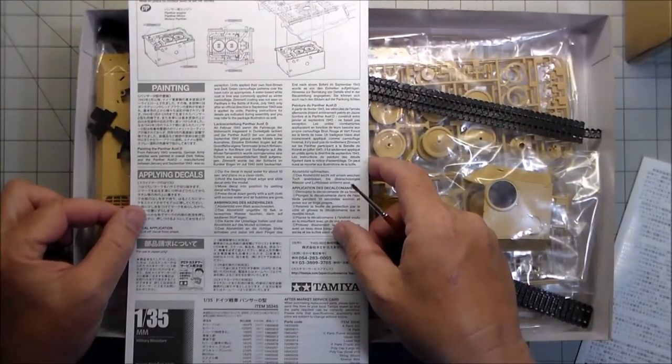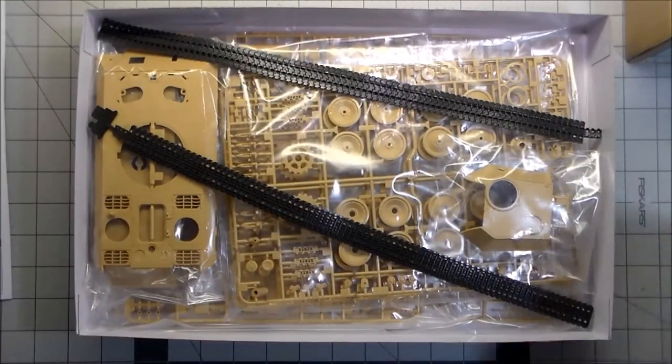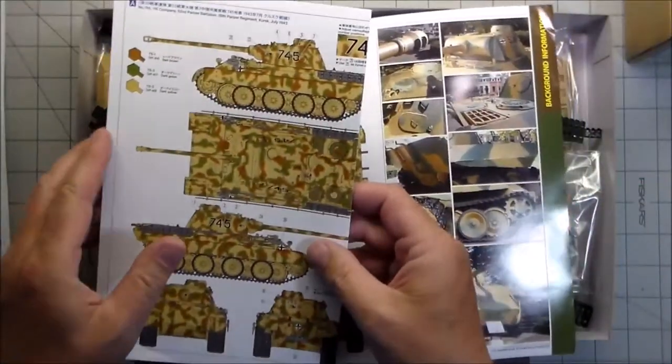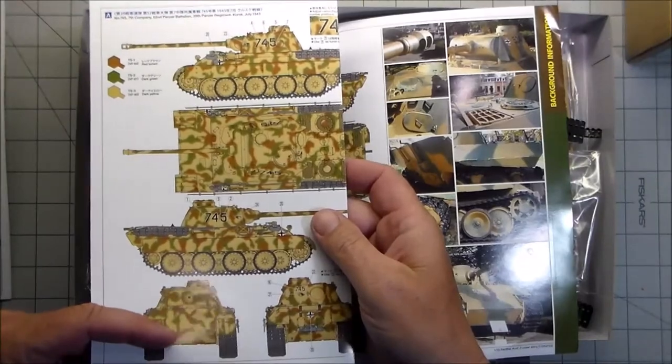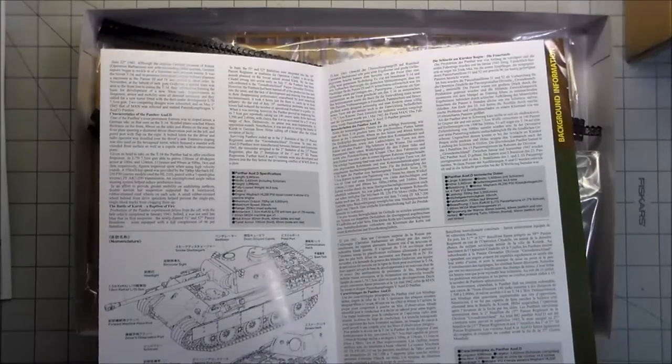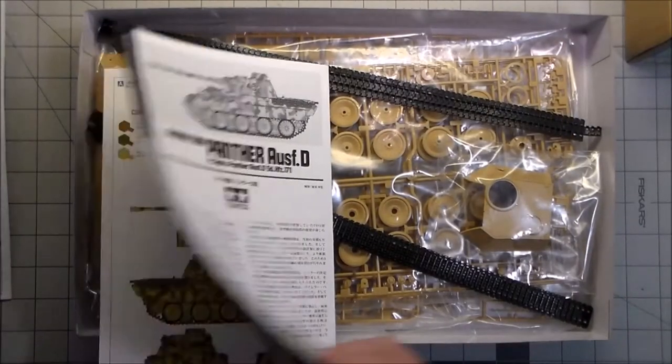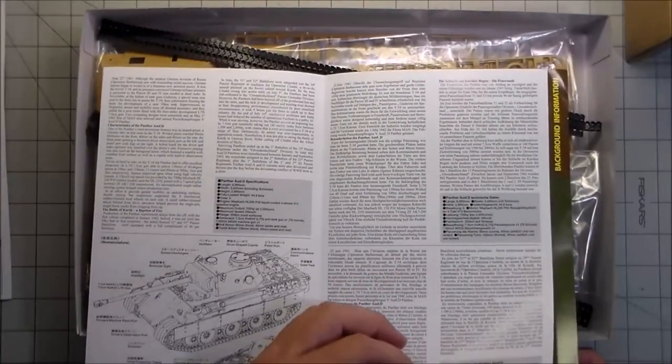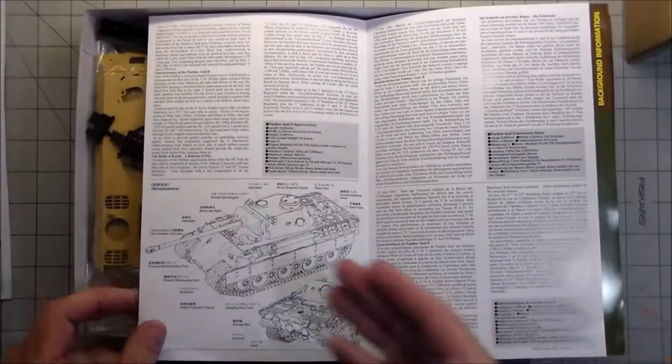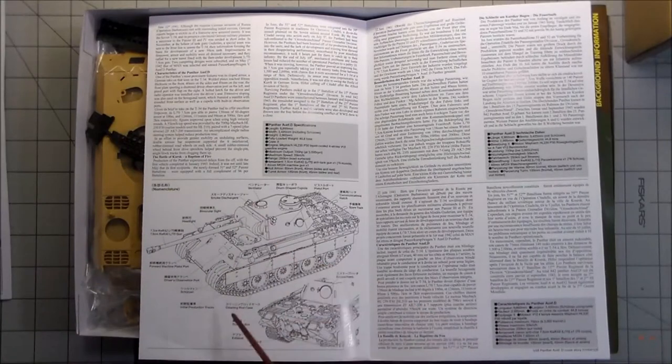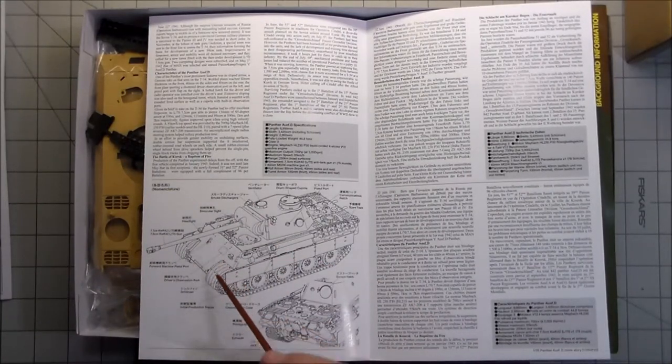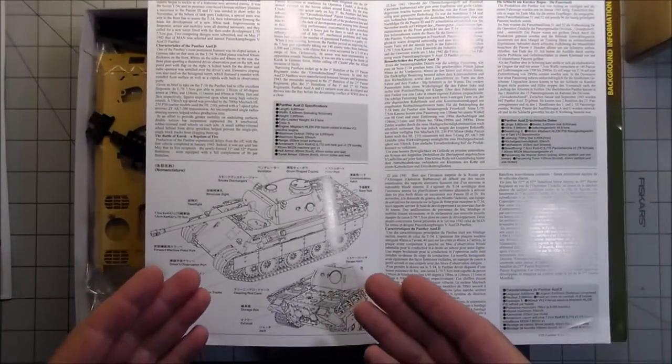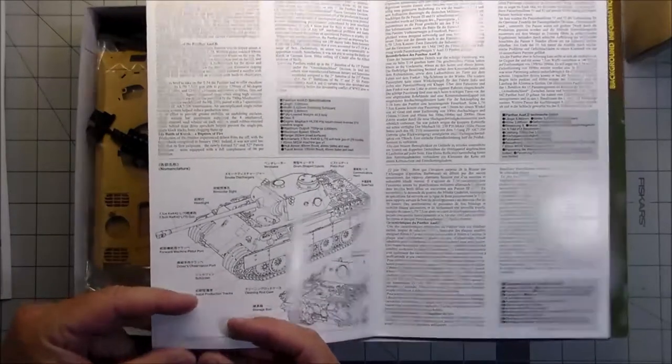Then we got this really nice heavy paper stock, glossy paper stock with background information in Japanese, English, French, and German. This illustration here showing what the different parts are - you got smoke dischargers, driver's observation point, port for machine gun, pistol port - it just labels everything. That's kind of nice, especially for somebody just beginning or getting into armor kits. They know what things are called.